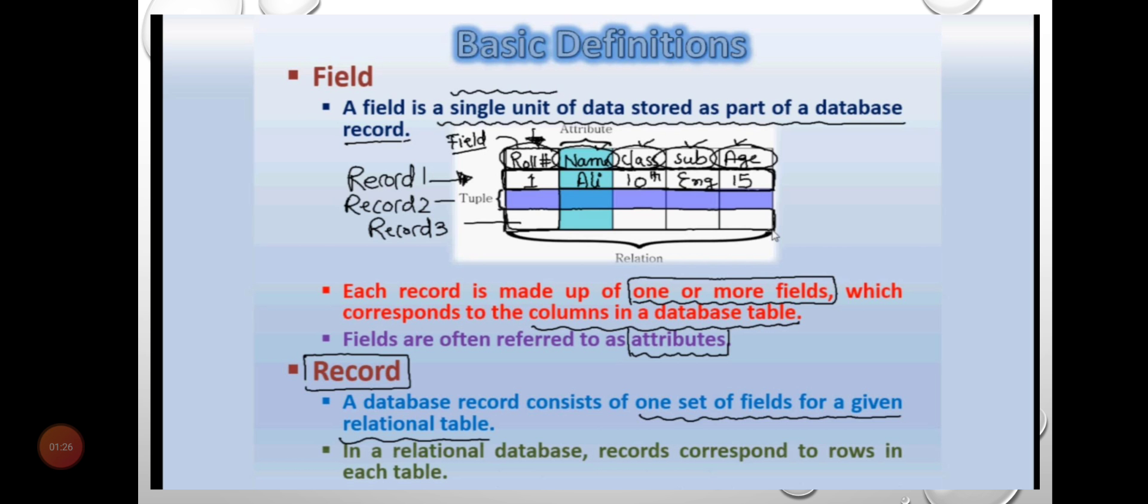Here are some rows and columns in tabular form. The vertical form of the grid is called the column and horizontal form is the row. The intersection of row and column is called a cell. Each record is made up of one or more fields which correspond to the columns in a database table. Fields are often referred to as attributes. A database record consists of one set of fields for a given relational table. In a relational database, records correspond to rows in each table.